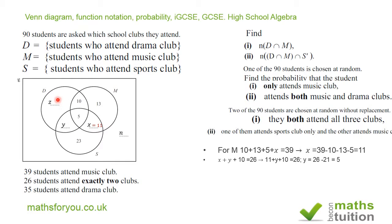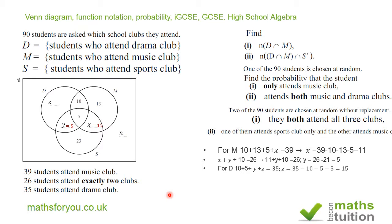Next we need to find Z. To find Z we use the information about the drama club total of 35. So 10 plus 5 plus 5 plus Z equals 35, which gives Z a value of 15.